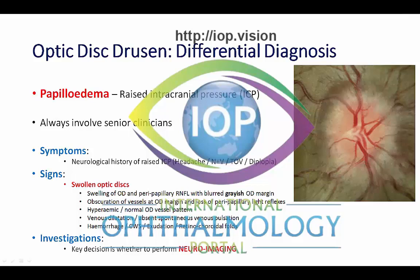The signs in papilledema can be very difficult depending on what stage you're looking at. None of us would miss an advanced stage 4 or later swollen optic disc in papilledema, but in the early stages it can be very difficult to detect. The swollen optic discs of papilledema do look different: there is swelling of the optic disc and the peripapillary retinal nerve fibre layer, so the edge of the disc takes on a blurred, white, greyish appearance. Characteristically, you get obscuration of the vessels as they cross the optic disc margin, and loss of the peripapillary light reflexes. The discs are characteristically hyperemic and should have a normal optic disc pattern.